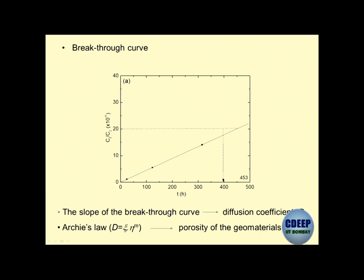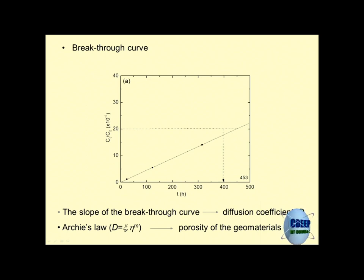One of the applications of the diffusion coefficient is that you can determine the porosity of the system very precisely. Porosity is a very important parameter in guiding most of the mechanical as well as chemical, electrical, or magnetic properties of geomaterials. If you want to characterize porous media, the best way is to establish its porosity in the best possible manner and very precisely. This is what is known as Archie's law.